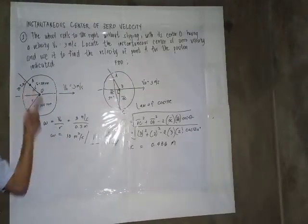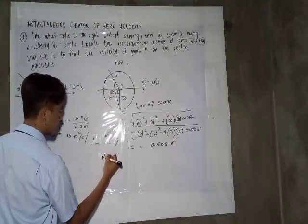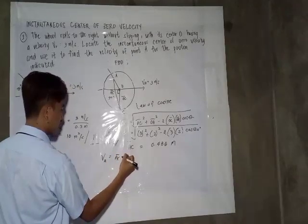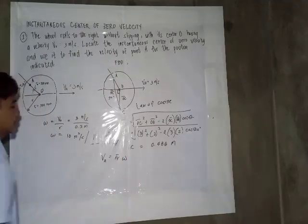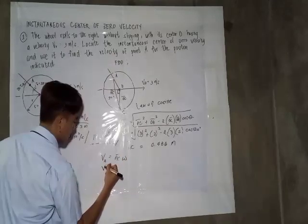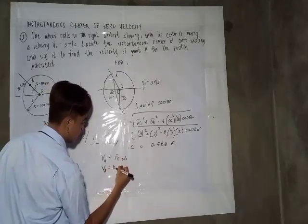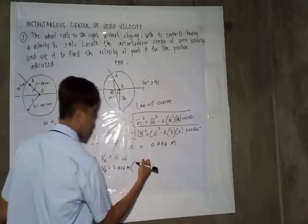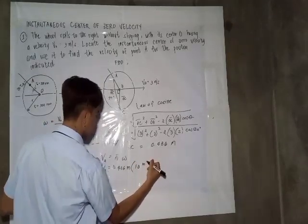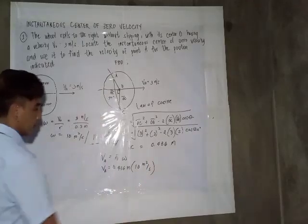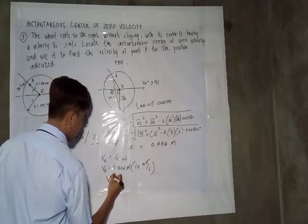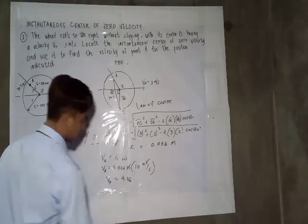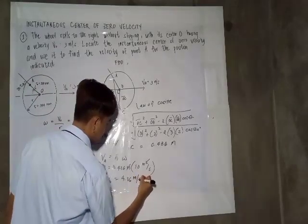we can now get the velocity at point A. So simply, the velocity of point A equals line AC multiplied by the angular velocity. So simply, velocity of point A equals 0.436 meters multiplied by 10 radians per second. Cancel this. So velocity of point A equals 4.36 meters per second.